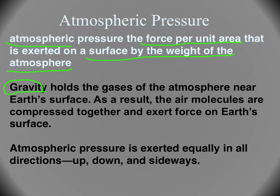Gravity takes the gases of the atmosphere and holds them near Earth's surface. That's why, if you remember that picture, there were more blue dots at the bottom closer to Earth's surface than at the top. Closer to the center of the Earth, the more gravity there is, so there are more air molecules compressed together at the surface than farther up.